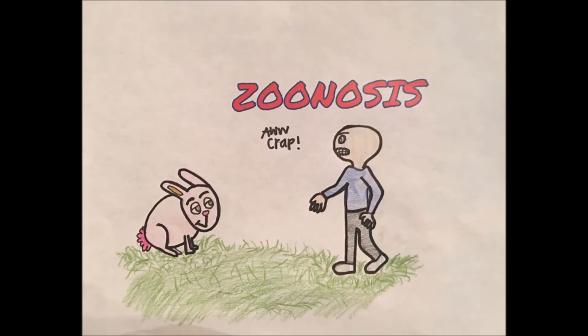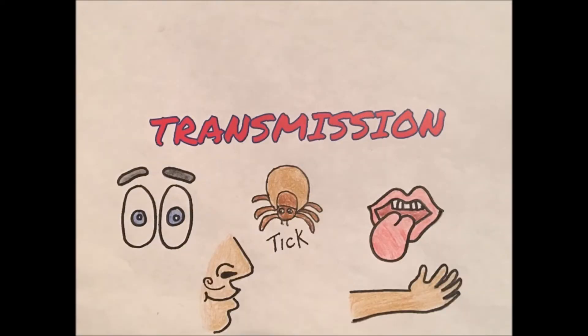Tularemia is a zoonosis, meaning that it is a disease that can be transmitted to humans from animals. Tularemia can be transmitted through multiple ways. It can be contracted through the skin, eyes, lungs, and mouth. The most common form of transmission for this pathogen is through direct contact with an infected animal such as a bite, lick, or through the handling or cleaning of a carcass of an infected animal.